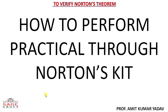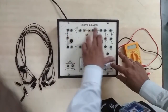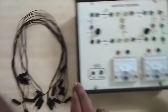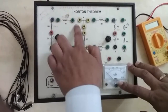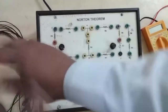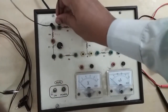In the second part of this video, we are going to perform Norton's theorem using an experimental kit. We will calculate experimental values, then compare those experimental values with the theoretical values. For this experiment we require the Norton theorem kit, a multimeter, and patch cords. Let us start — first I will complete the circuit by connecting the open terminals using patch cords.